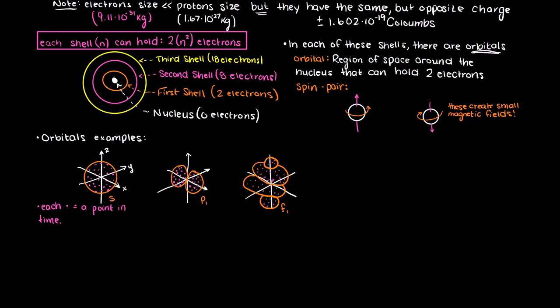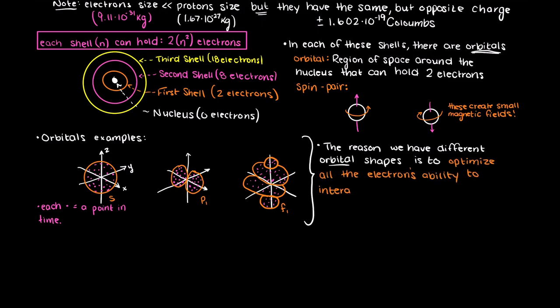But if we observe the atom over time, we will see that the electrons of given shells present themselves somewhere in the shape about 95% of the time. If we hypothetically were to observe the electrons for a long period of time, we would see the shell shapes appear. The reason that we have different electron shell shapes in nature is to optimize all of the electrons' ability to interact with the central nucleus while also avoiding each other, as similarly charged particles want nothing to do with each other.